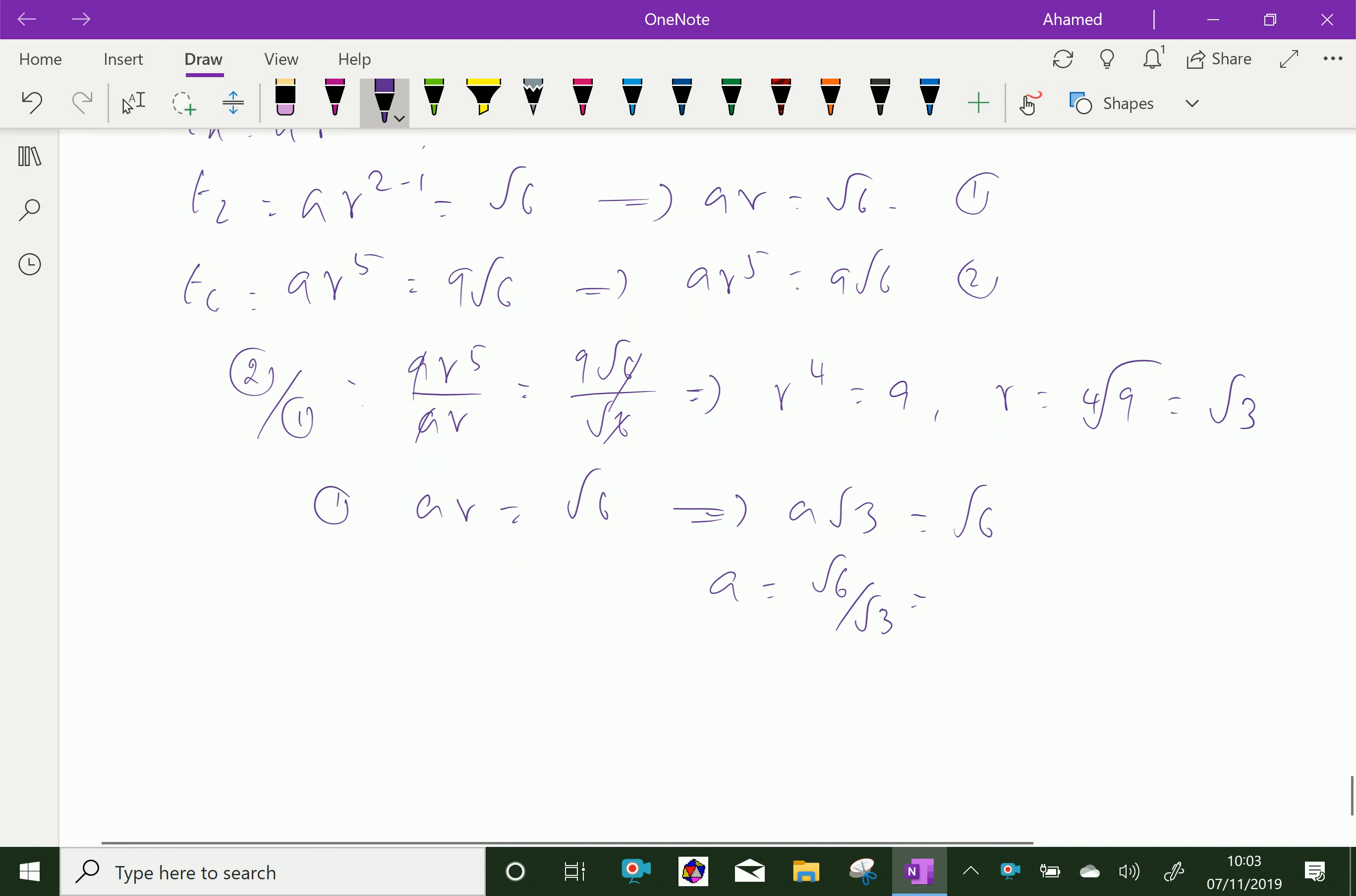We can write √6 as √3 times √2 over √3, which gives √2. So a equals √2.